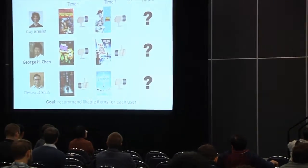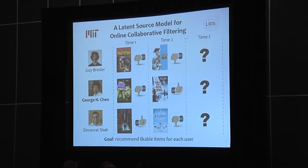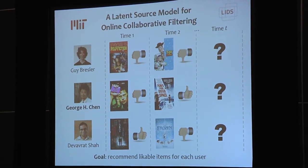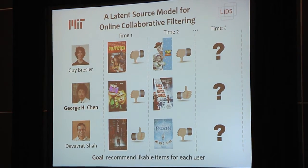Welcome to the second Spotlight session. First we have George Chan, who is going to be talking about latent source model for online collaborative filtering. Hi, my name is George, and I'm here to share with you some joint work with my co-authors Guy Bressler and Deverette Shaw. We are interested in the setting of online recommendation systems, which are systems where you recommend items to users over time.